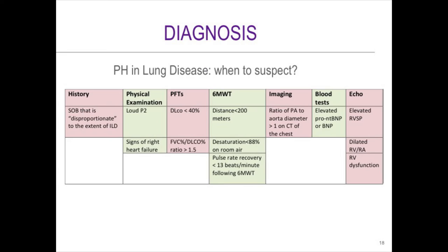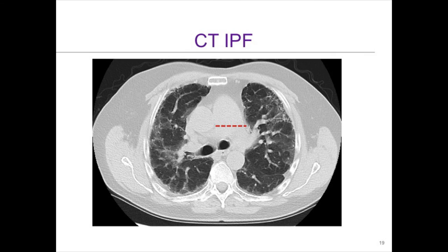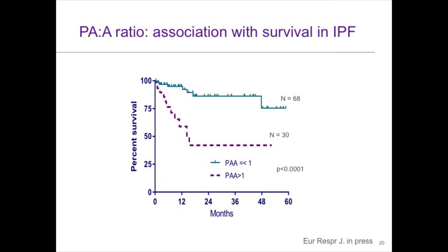Standard biomarkers like NT-ProBNP can give an idea if there's pulmonary hypertension and heart failure. ECHO is a very good screening tool but not a diagnostic test — if you want to make the diagnosis, you always need a right heart cath. On CT, we not only look at the parenchyma but also the mediastinum. You'll notice the PA can be rather large — compare it to the diameter of the aorta, and if the ratio is greater than one, this might indicate underlying pulmonary hypertension. We have a study, now an EPUB in the ERJ, looking at this ratio as an independent indicator of survival in patients with IPF.